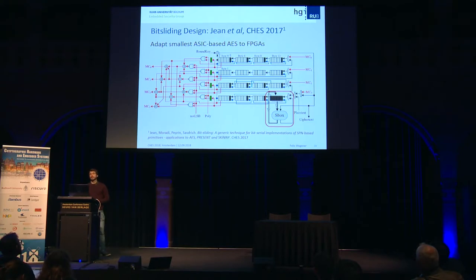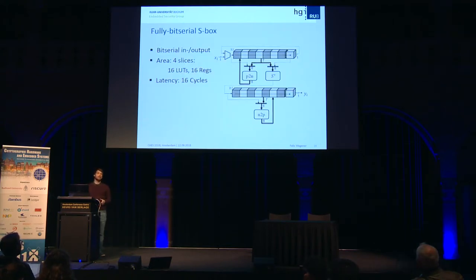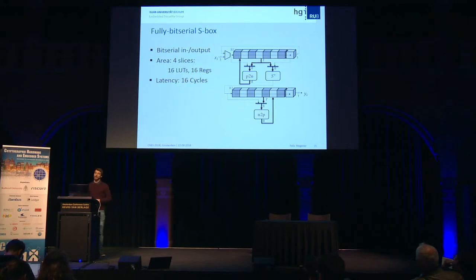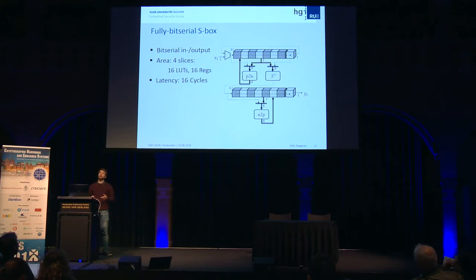The bit-sliding S-box uses a one-bit data path, while we use an 8-bit data path, so we adapt slightly. In our fully bit-serial S-box, X is shifted in bit-serially and buffered in a register; after all bits arrive, the P2N transformation occurs, and then S-star is evaluated cycle-wise. This has higher latency — 16 cycles, because 8 cycles are needed to shift the operand in. We found a normal basis suitable for area minimization, realizing it in 4 slices.